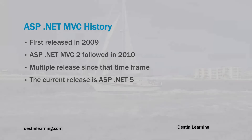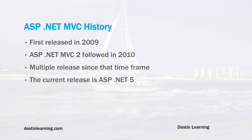A little bit about the history of ASP.NET MVC: it was first released in 2009, and quickly a second version of MVC followed in 2010. There have since been subsequent versions and updates, and the current release is ASP.NET MVC 5. In the subsequent slide, we'll talk a little bit more about some of the newer features of ASP.NET MVC 5 and where you can get more current information on that version.